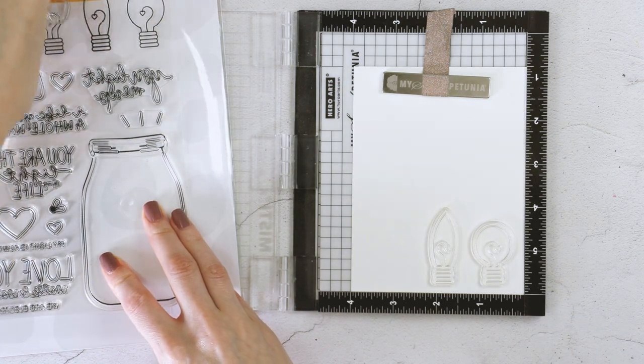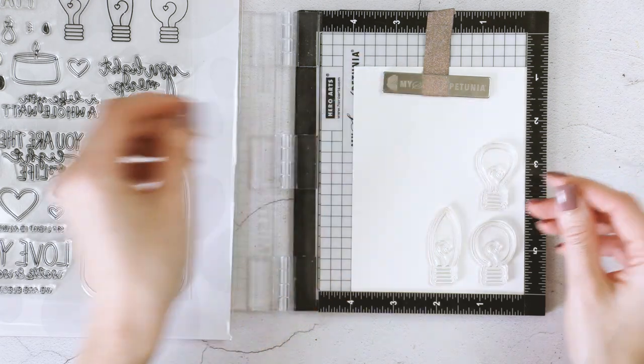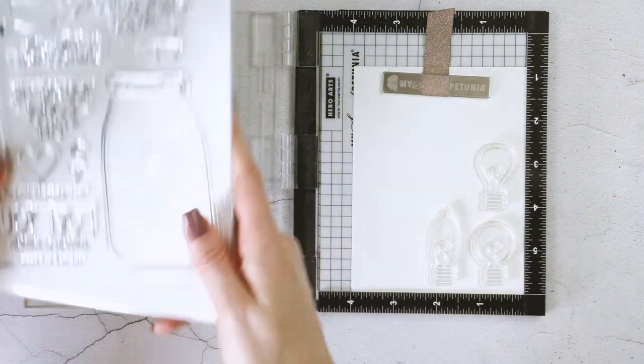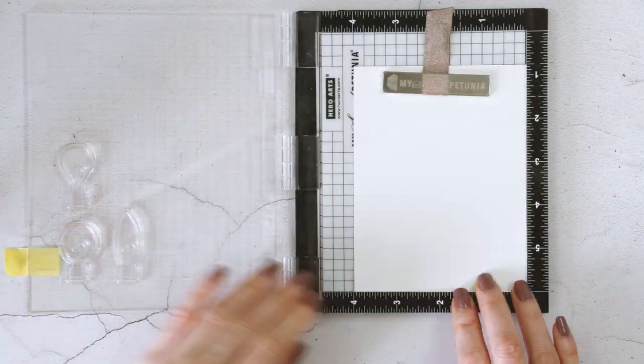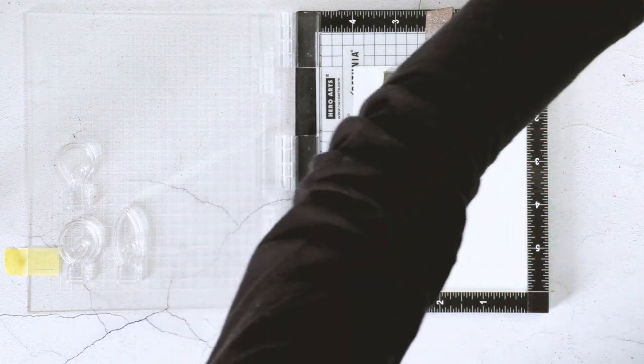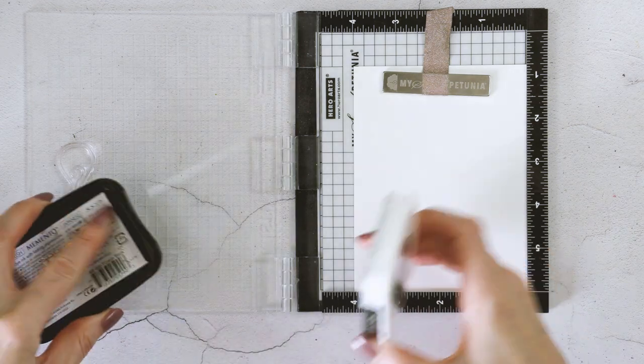In addition to this stamp set, we will also need black cardstock to symbolize darkness, yellow cardstock to symbolize light, some copic marker friendly ink to do our stamping, and a handful of copic markers to color the light bulbs for our cards.